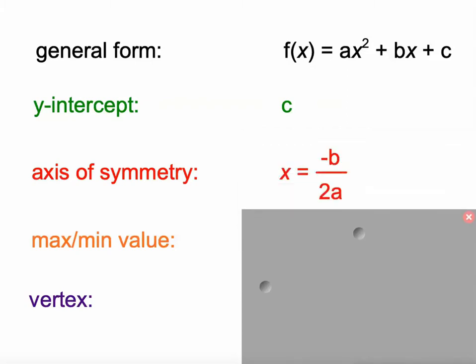Axis of symmetry is found by taking the opposite of the b value, the opposite of the coefficient of the middle term, and dividing by 2 times a, double the coefficient of the first term. So x equals negative b over 2a, that'll be your axis of symmetry. The maximum or minimum value will be found when we take that value and plug it back into the function and get an output. So if this is our input, our minimum or maximum value is that output.